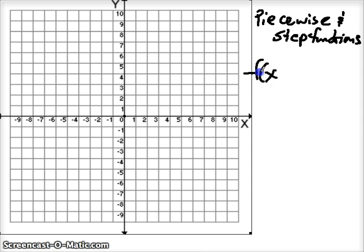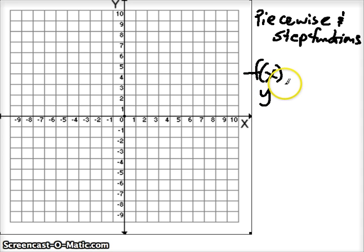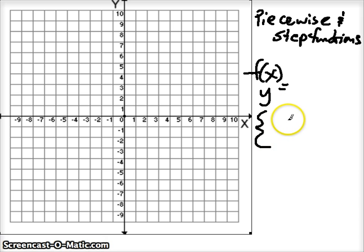Remember that f(x) is the name of a function, but it's also just our y — our output if we input x. Whatever value we input into our function, our output will be the f(x) or y. When we talk about piecewise and step functions, we're talking about multiple lines, and we're going to do it one at a time.